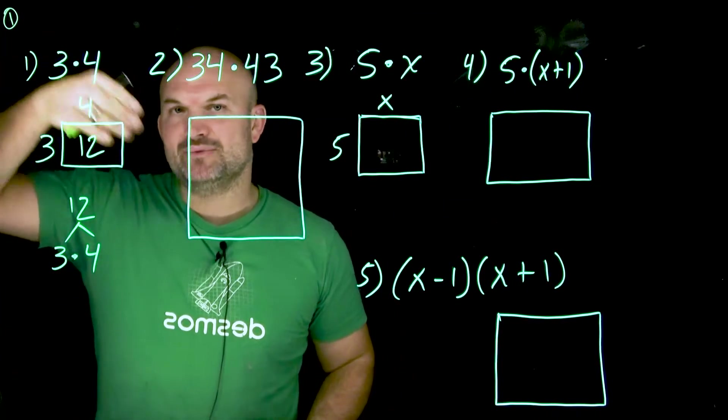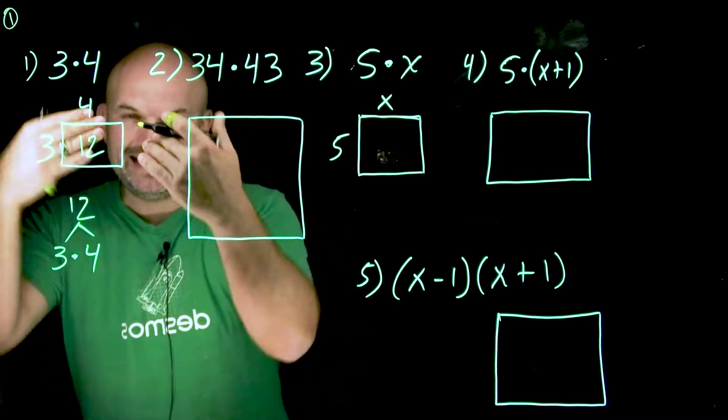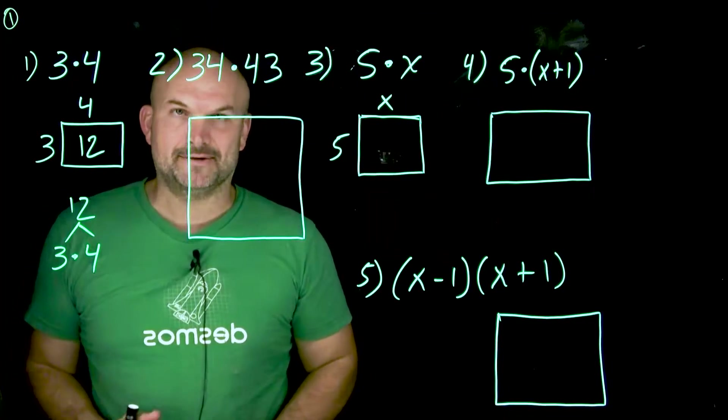So what that means is when we multiply, we get the area. But when we are factoring, what we're technically doing is we're given the area of a rectangle. We're trying to find the sides of that rectangle.